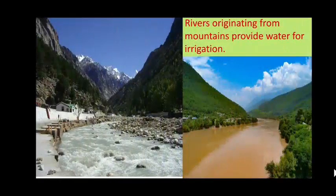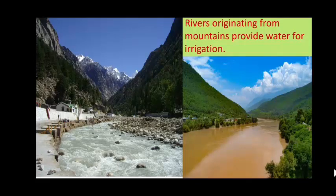Rivers originating from mountains provide water for irrigation. Mountains are known as the main source from where we get water for irrigation and for other purposes.